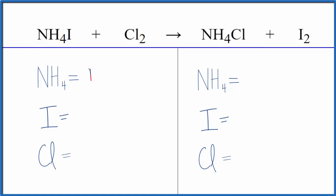So one ammonium ion, one iodide ion, and then two chlorine atoms. In the products, we have one ammonium ion. We have two iodine atoms and one chloride here.